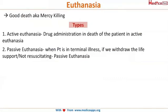What is euthanasia? We know that it's nothing but mercy killing. There are two types: active euthanasia and passive euthanasia. In active euthanasia, the drug administration results in death of the patient — you give a certain drug in order to cause the death of the patient.